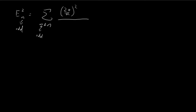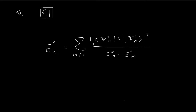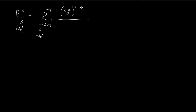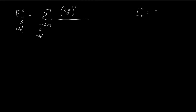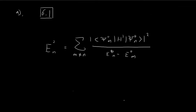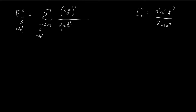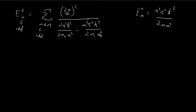Moving on to the denominator, we have the nth energy level minus the mth energy level. For the nth energy level we have the formula n-squared pi-squared h-bar-squared divided by 2m_0 a-squared (using m_0 for mass to avoid confusion with the index m). Substituting this into the denominator gives n-squared pi-squared h-bar-squared divided by 2 m_0 a-squared, minus m-squared pi-squared h-bar-squared divided by 2 m_0 a-squared.